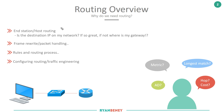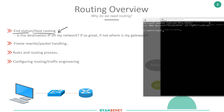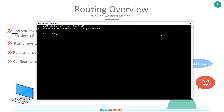Let's talk about the first topic: end station or host routing. Each PC device has its own internal routing table. If you take, for example, this PC that I'm on, if you were to put 'route print' at the command line and press Enter, you can see this is my routing table on this particular PC.